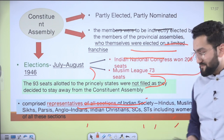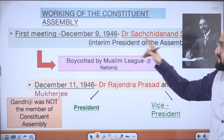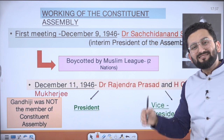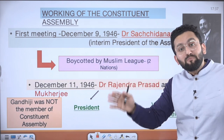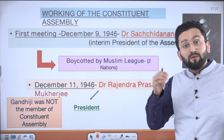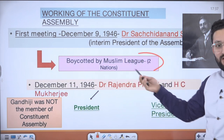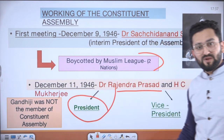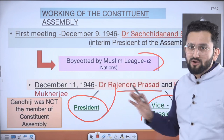Working of the Constituent Assembly: the first meeting happened on December 9, 1946. Considering seniority, Dr. Sachidananda Sinha was declared as interim president of the Constituent Assembly — you always need a presiding officer to ensure proper functioning. As mentioned, the Muslim League boycotted. On December 11, Dr. Rajendra Prasad was elected as president and H.C. Mukherjee as vice president. You should keep in mind a basic fact — Gandhiji was not part of the Constituent Assembly.